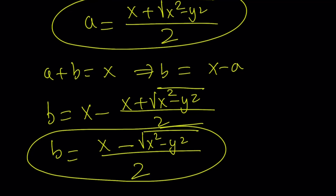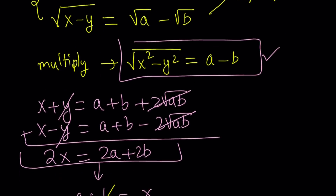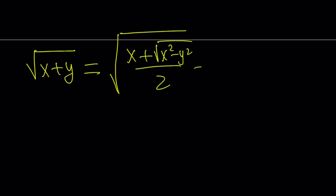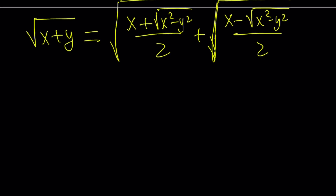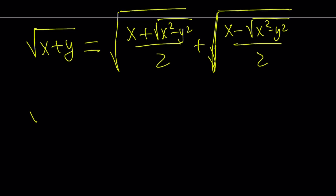Now we can put it all together. Our expression was originally the square root of x plus y, and we assumed it could be written as square root of a plus square root of b. So we can summarize the result: the square root of x plus y equals the square root of [(x plus the square root of x squared minus y squared) divided by 2] plus the square root of [(x minus the square root of x squared minus y squared) divided by 2]. I wanted to share this formula — I think it came up in the comments, and I'll find the link and share it.